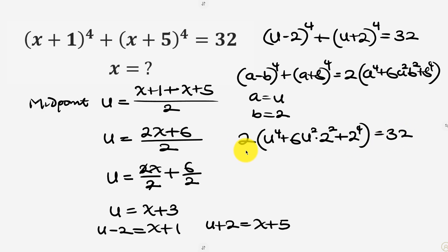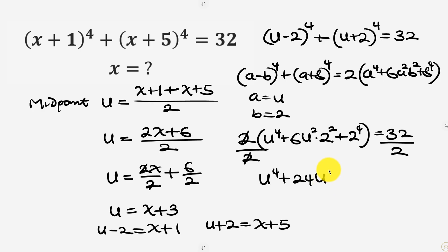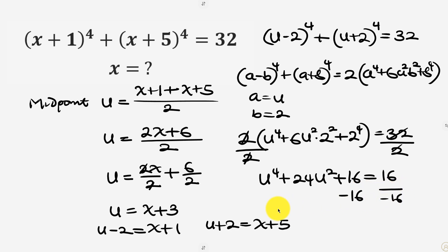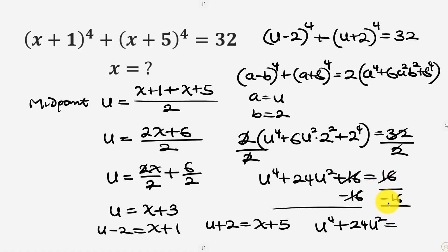Simplifying further, we divide both sides by 2, giving u⁴ + 24u² + 16 = 16. Then subtracting 16 from both sides, we get u⁴ + 24u² = 0.